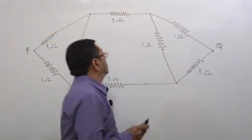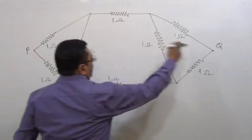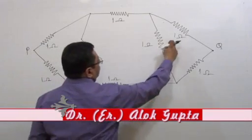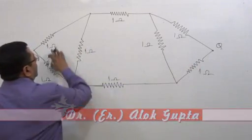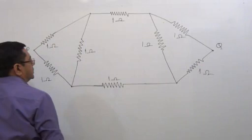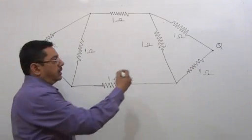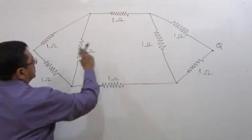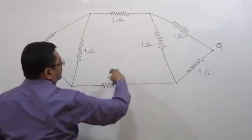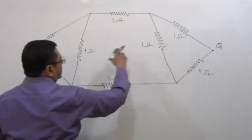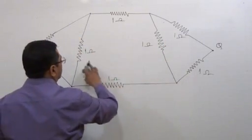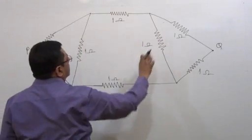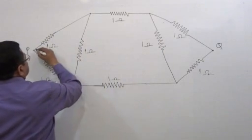There is a doubt: between P and Q, resistances are connected — each of one ohm. What is the total resistance between P and Q? If you see, this is not in parallel nor in series. It is not a direct series or parallel combination, because a third resistance is connected between those two.